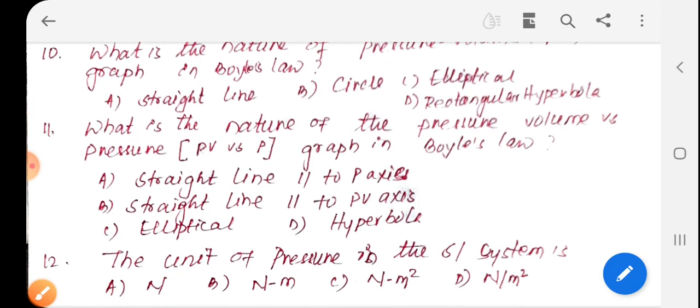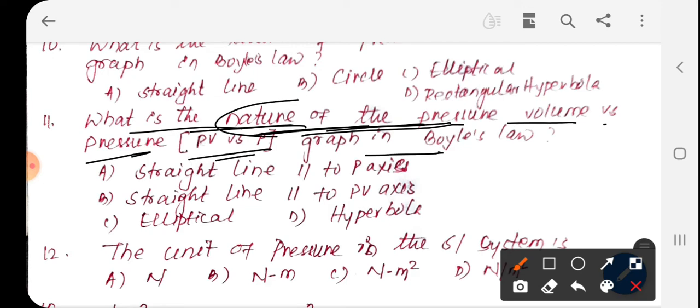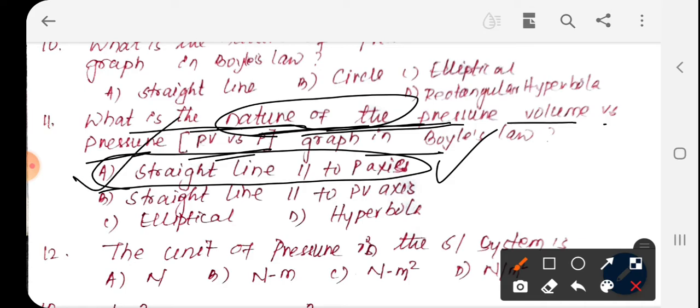Next question: What is the nature of the pressure versus volume graph? The graph nature is a straight line parallel to the P axis. This option is correct.